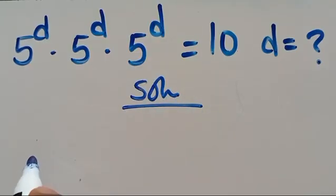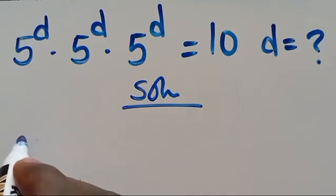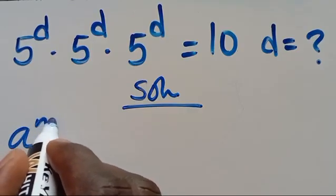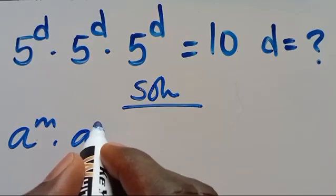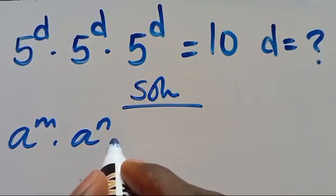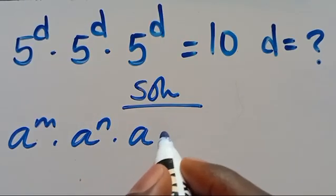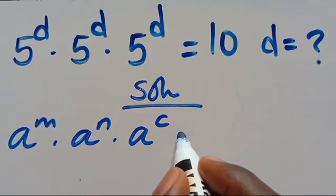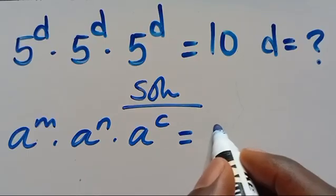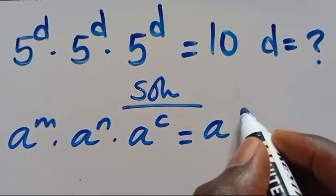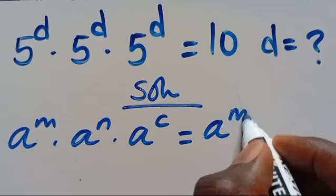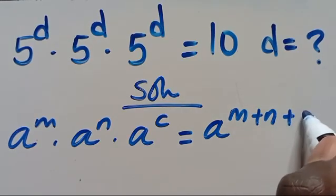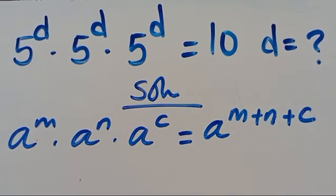Let's have the solution. Recall that when we have A to the power of M multiplied by A to the power of N multiplied by A to the power of C, this can be simplified as A to the power of M plus N plus C.